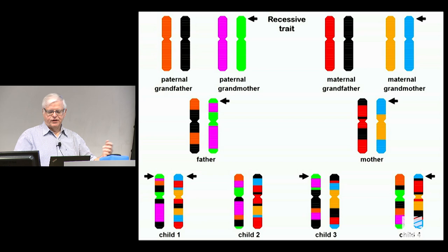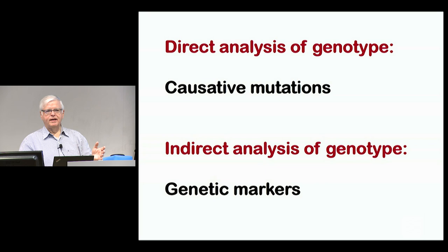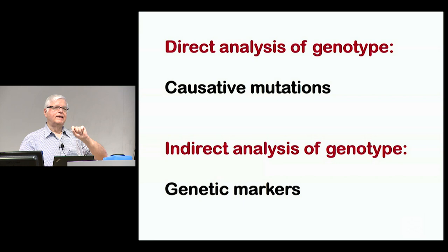Subsequently, as technology improved, we got to single nucleotide polymorphisms being all over the place. In the end, it all comes down to either a direct analysis — looking for the causative mutation and tracking it in the family — or an indirect analysis using genetic markers. For direct analysis, you either have to already know what you're looking for, or believe you can home directly in on the one that matters out of millions of variations in the human genome. That's kind of unrealistic, so indirect analysis of genotype is the standard in first-track genetic analysis.